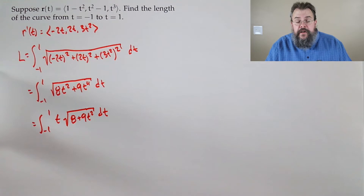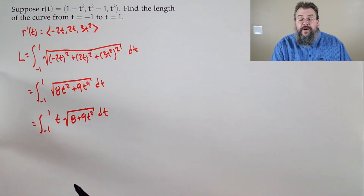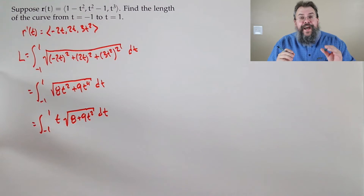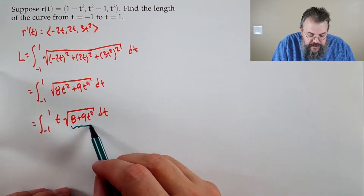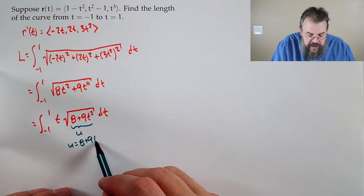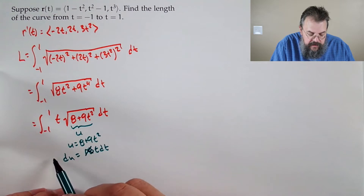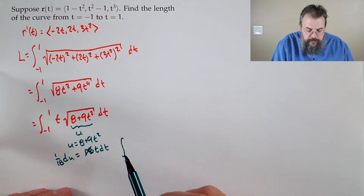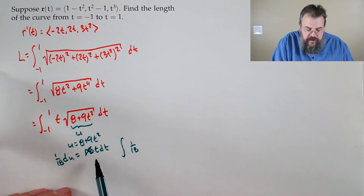But there's something in common — we can pull out a t² . The square root of t² gives us t, so we have the integral from −1 to 1 of t√(8 + 9t²) dt. We can do a substitution: let u = 8 + 9t², so du = 18t dt, meaning t dt = (1/18) du.